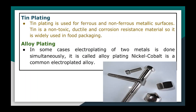Tin plating is used for ferrous and non-ferrous metallic surfaces. Tin is a non-toxic, ductile, and corrosion-resistant material, and is widely used in the food packaging industry. Sheet metal coated with tin can be processed further without any damage to the surface, due to the excellent ductility of tin and its alloys. Tin plating is also used in the electronic industry because of its ability to protect the base metal from oxidation and to preserve solderability.